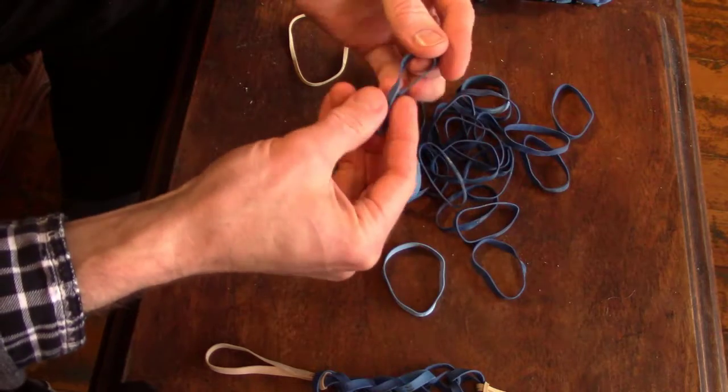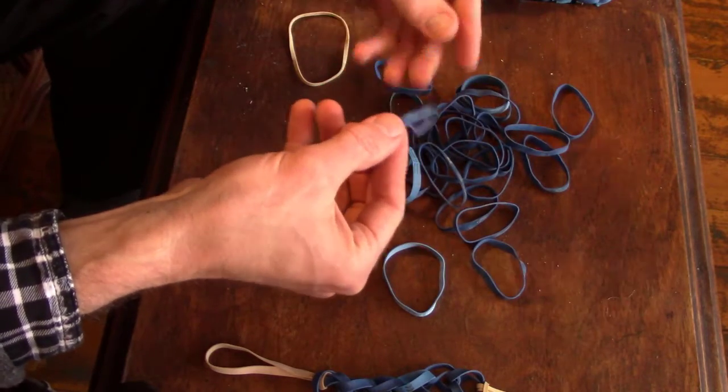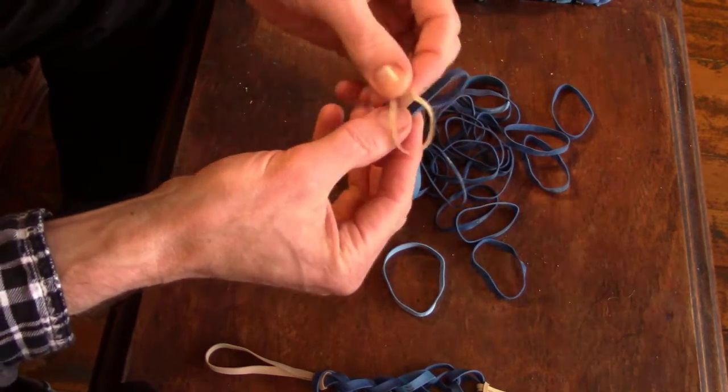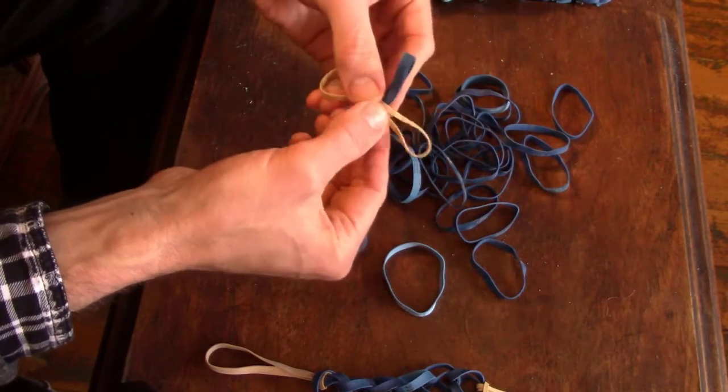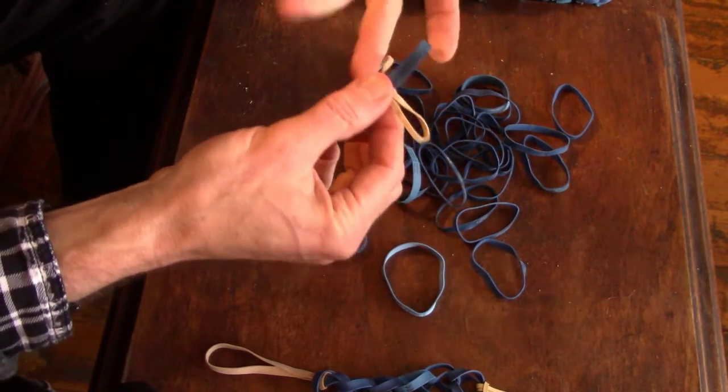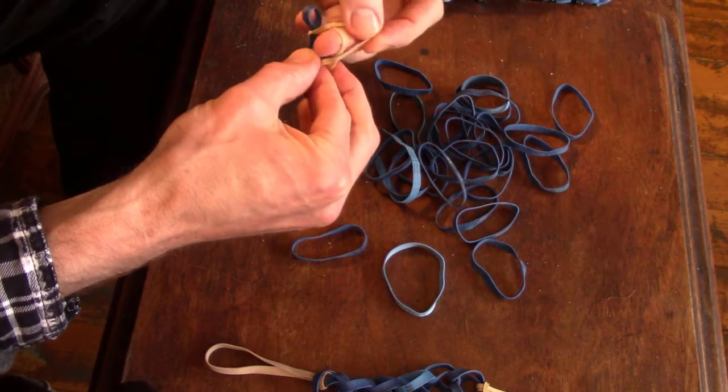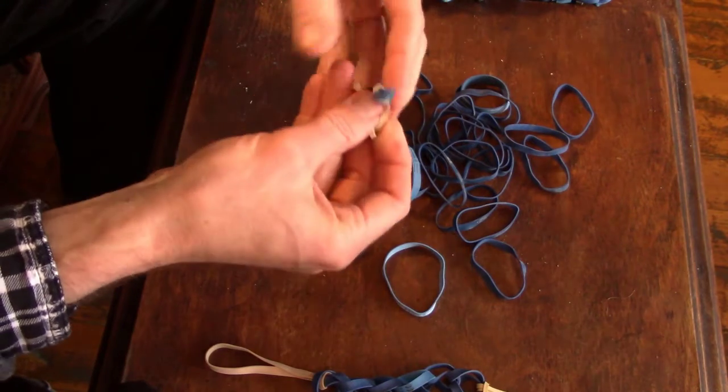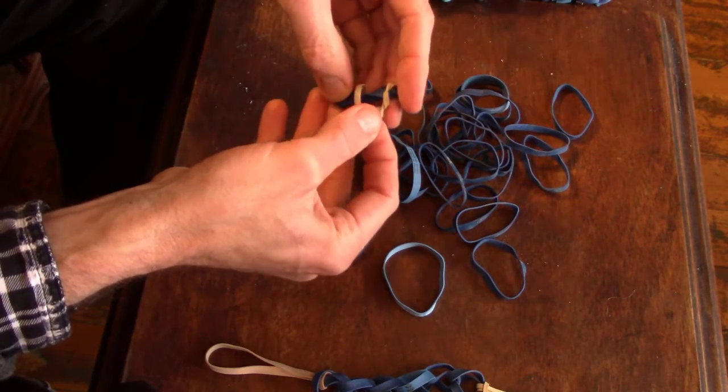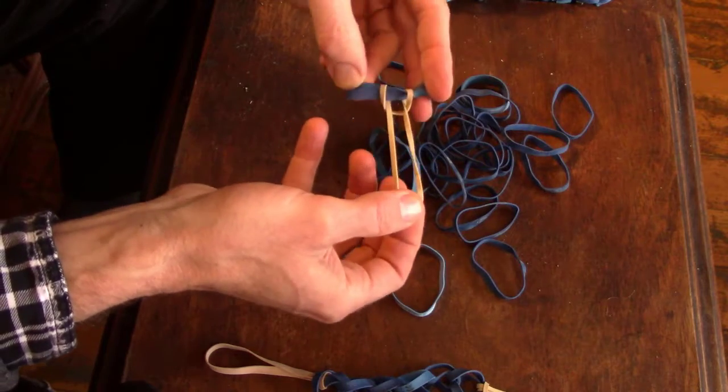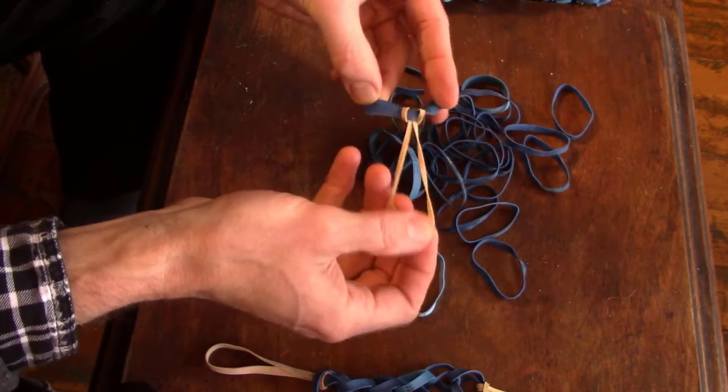Let's do some practice. The first knot will be simply what I call a tie-off. Using one elastic, insert the end through the center and just pull it gently. That's a simple one.